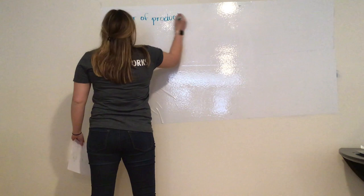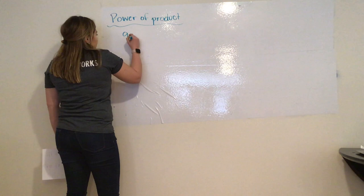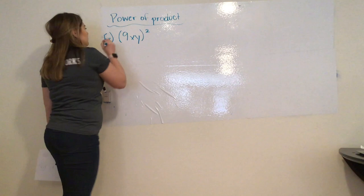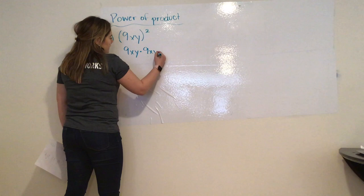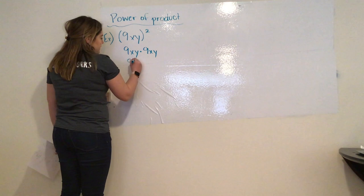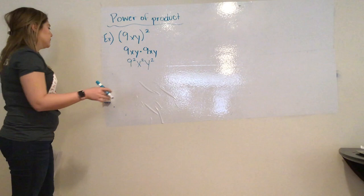We have 9xy all raised to the second power. That's our first example. Same thing as we did before, we're going to expand it. So, this gives us 9xy times 9xy. And as you can see, it's now 9 to the second, x to the second, and y to the second.